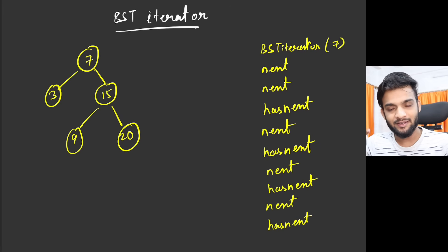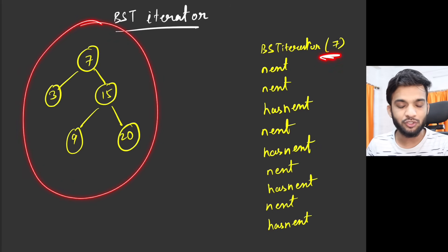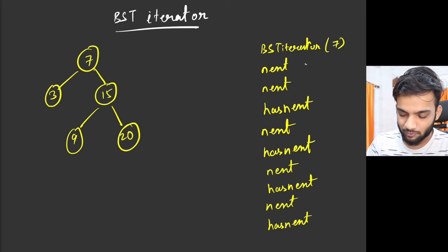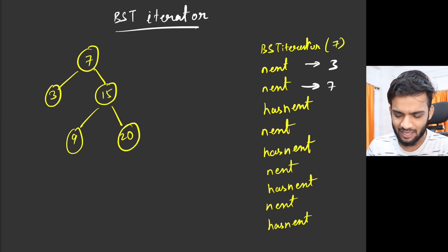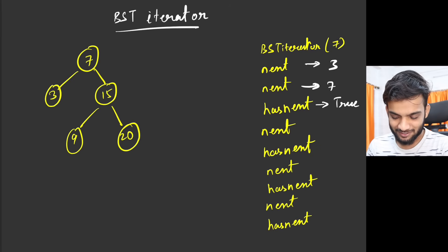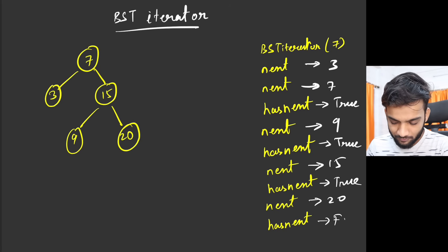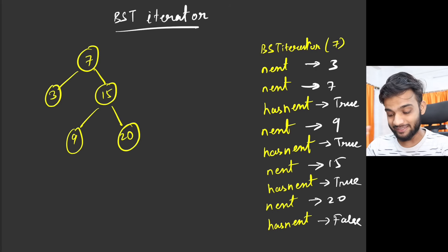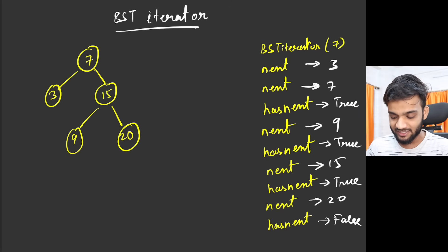For example, given a binary search tree with root 7: the first call to 'next' returns 3. Again calling 'next' returns 7. Calling 'hasNext' while standing at 7 — does it have another next? Yes, so true. Next call returns 9, hasNext true. Next returns 15, hasNext true. Next returns 20, hasNext false — because there is no next after 20.